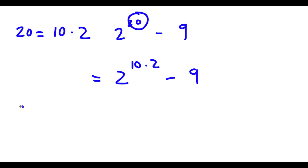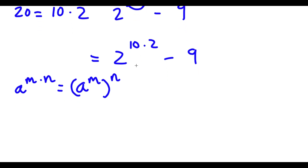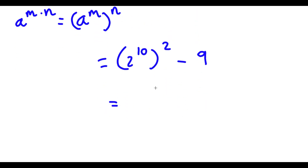Now if I have something in the form a to the power of m times n, this is equal to a to the power of m to the power of n. So 2 to the power of 10 times 2 I can rewrite as 2 to the power of 10 to the power of 2. And I have this minus 9, which I can rewrite as 3 squared. So now I have 2 to the power of 10 to the power of 2, minus 3 squared.